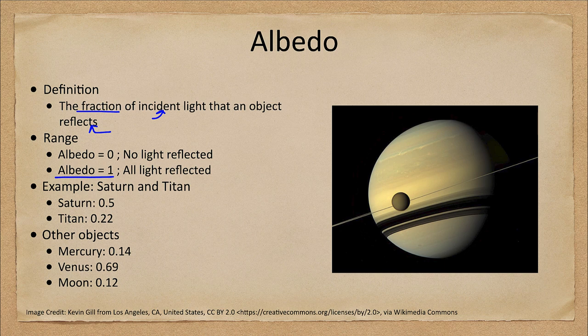Of course that would be ideal and that situation is not going to occur, but some objects do reflect a lot of light. Bright snow, for example, shortly after a snowfall will reflect a large percentage of the light — maybe eighty percent of the light striking it.